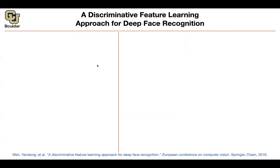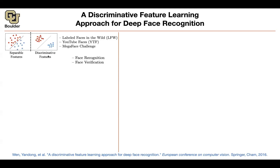Let's do face recognition. We saw two papers about face detection, alignment, and attribute predictions. Now let's go back to face recognition and face verification. These are the typical datasets you're going to work with. We had two methods: one from Facebook and one from Google.